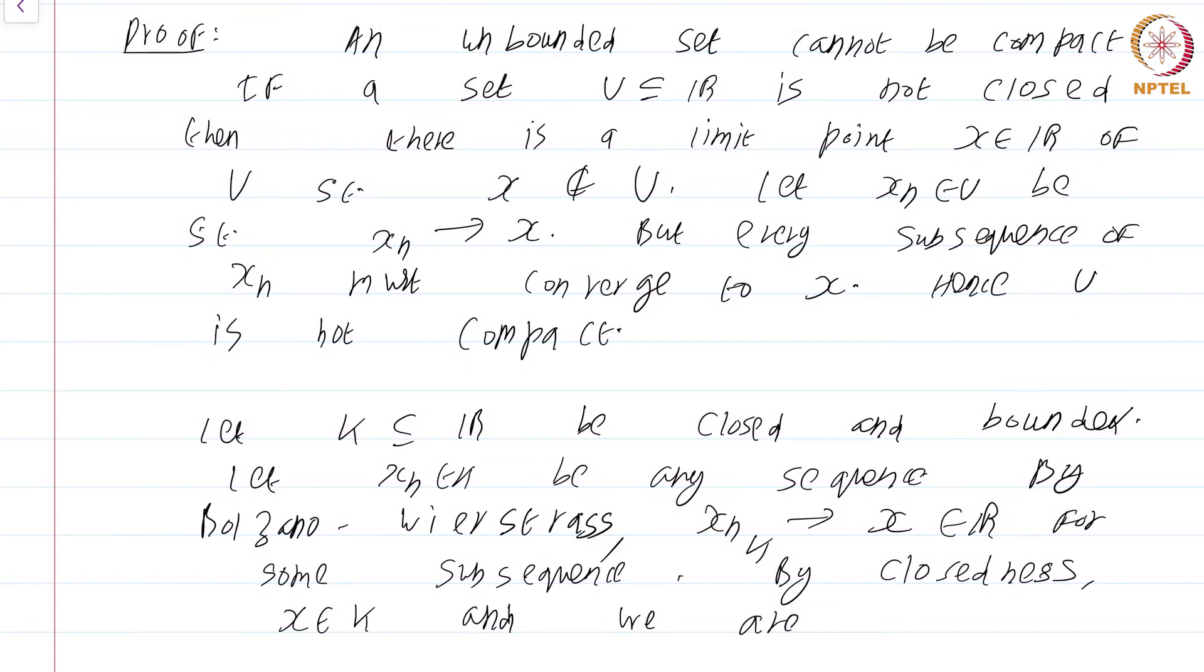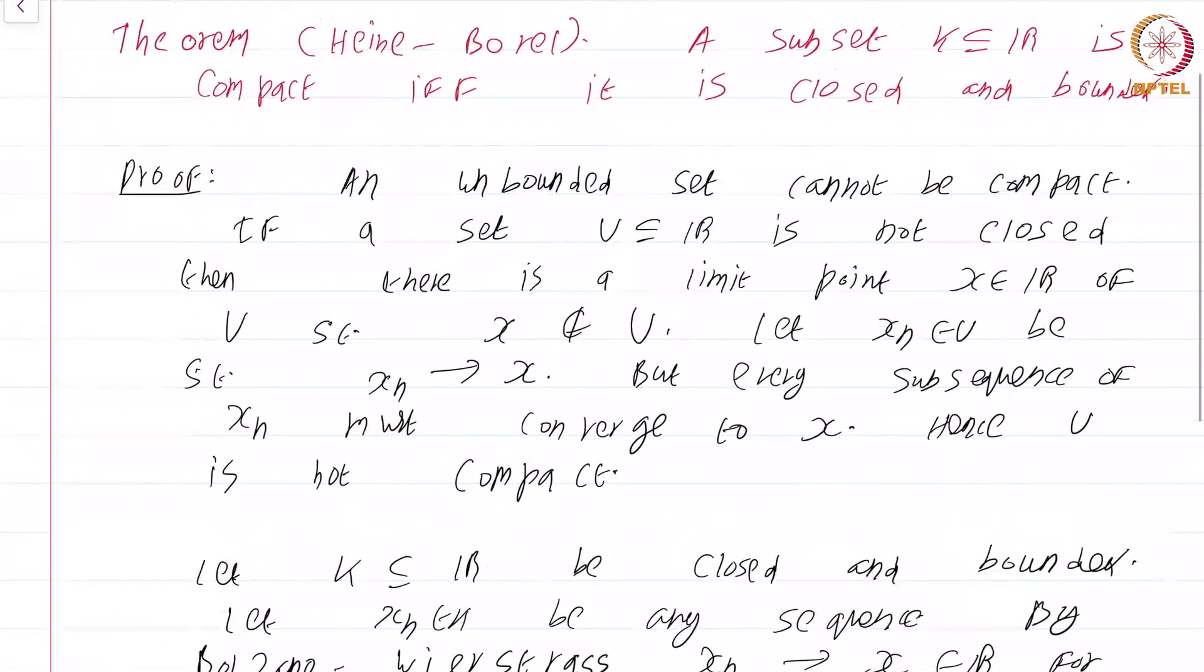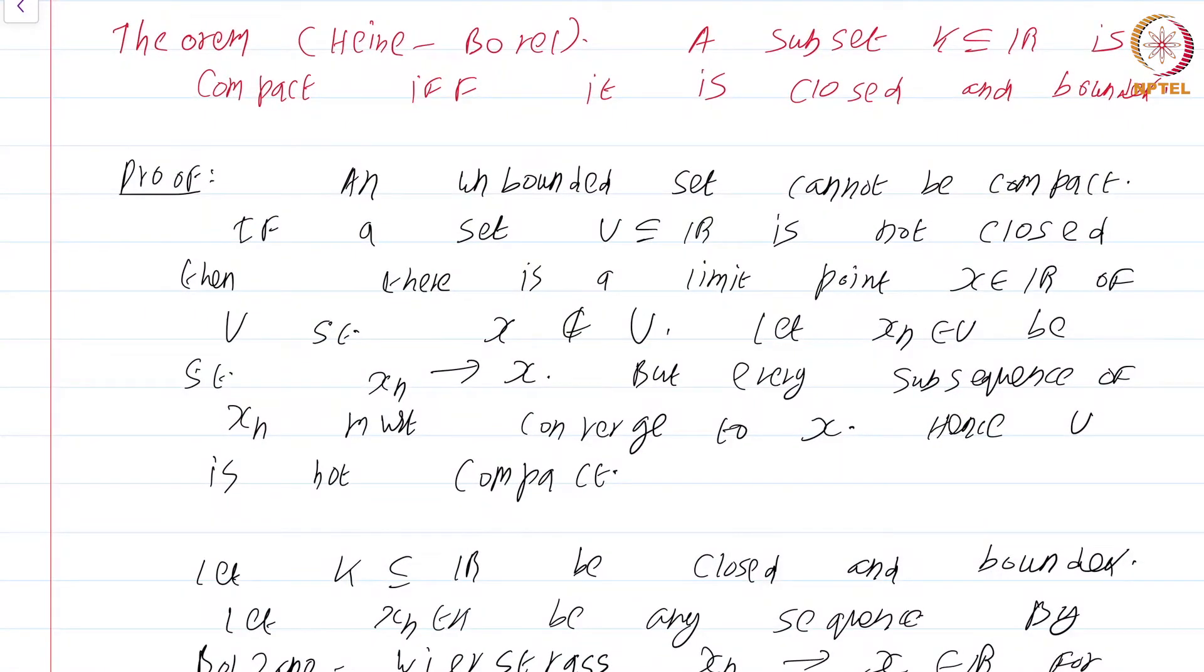By closeness, x is in K and we are done. This is word for word the argument we gave for a closed interval. So this short proof completely characterizes compact subsets of R. They are precisely the closed and bounded sets of R.